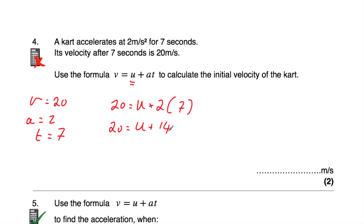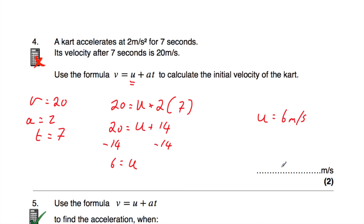Now we want the u on its own, so let's take away 14 from both sides. We get that 6 is equal to u. So u is equal to 6 metres per second — the initial velocity of the cart is 6 metres per second. In this question we were told the final velocity, the acceleration, and the time; we substituted them into the formula and found u.